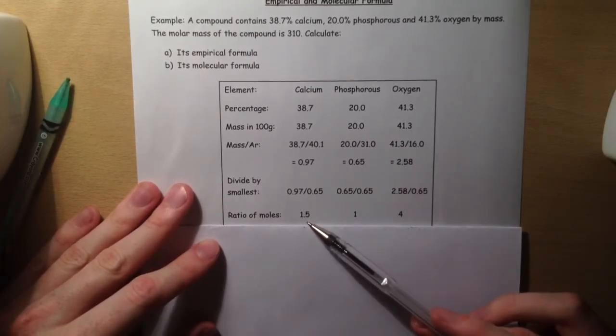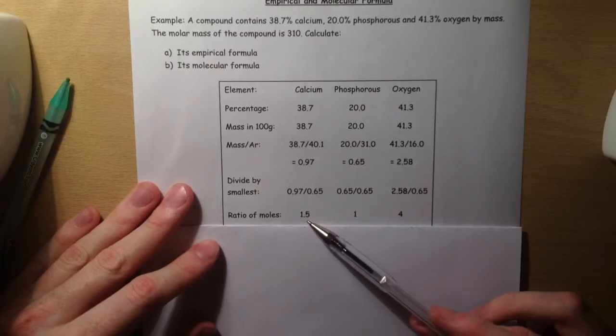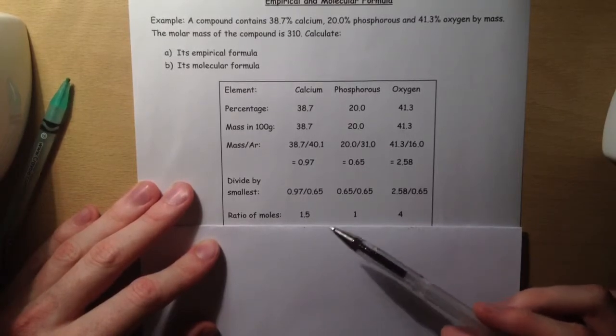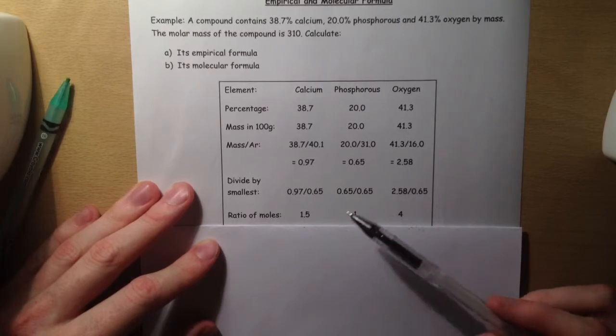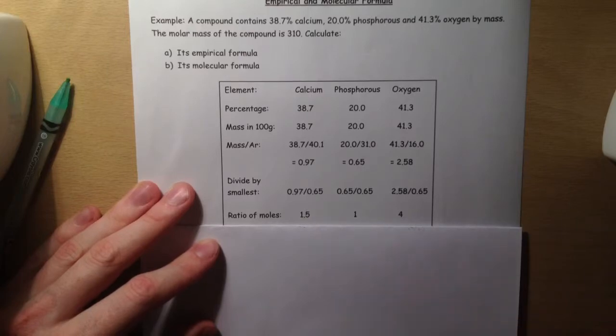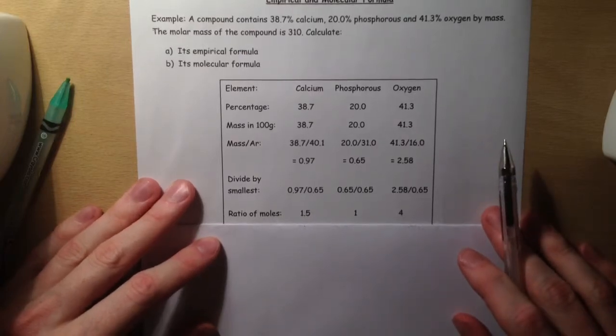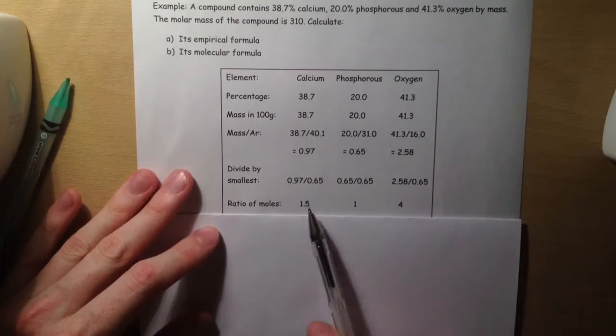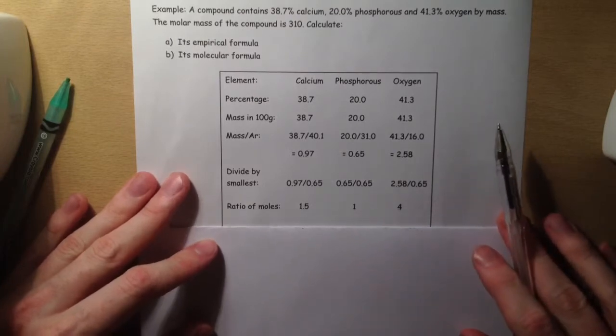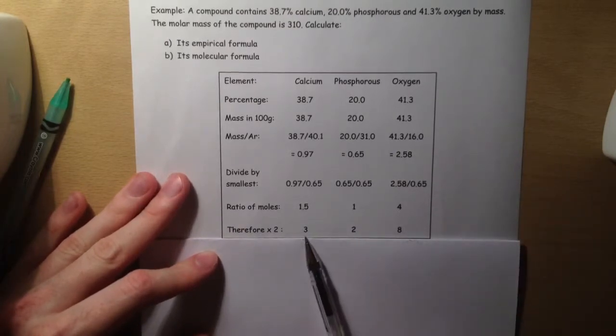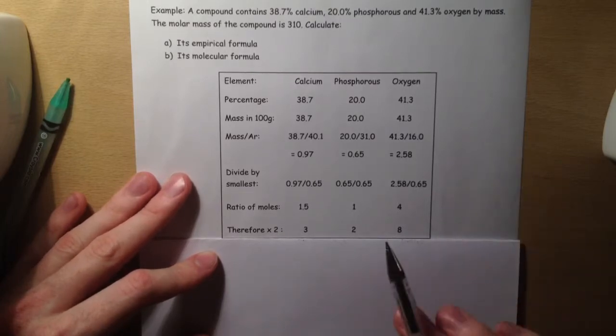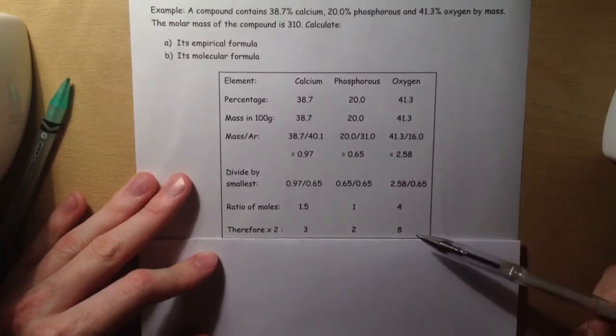We cannot use a 0.5 number. If you work out that it's 1.01, then you round down to one; if it's 1.97, you round up to two. We do round to the nearest whole number, but this 1.5 is too big a difference. We cannot round up from this. What we do to get rid of this decimal point is multiply all of these by two. We get three, two, and eight. These are the ratio of moles of each of these three things.